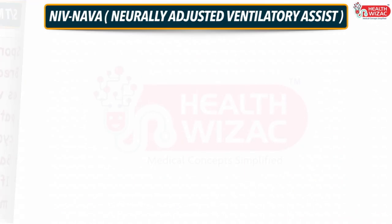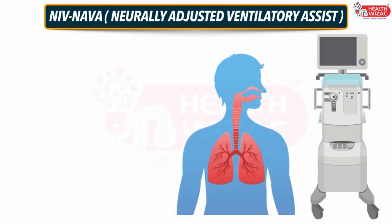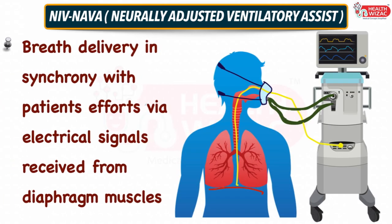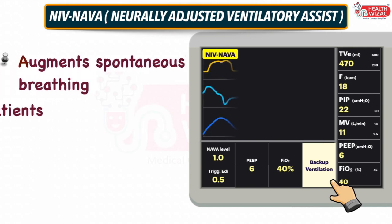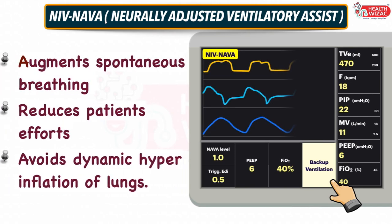Next is NIV NAVA — Neurally Adjusted Ventilatory Assist. As the name suggests, in this mode breath delivery is in synchrony with the patient's effort via electrical signal received from the diaphragm muscle. This mode is specifically present in ventilators only. We have to set: NAVA level, Edi trigger (diaphragmatic electrical impulse trigger), PEEP value, FiO2 level, and backup ventilation settings. This mode augments spontaneous breathing, reduces patient efforts, and avoids dynamic hyperinflation of the lungs.